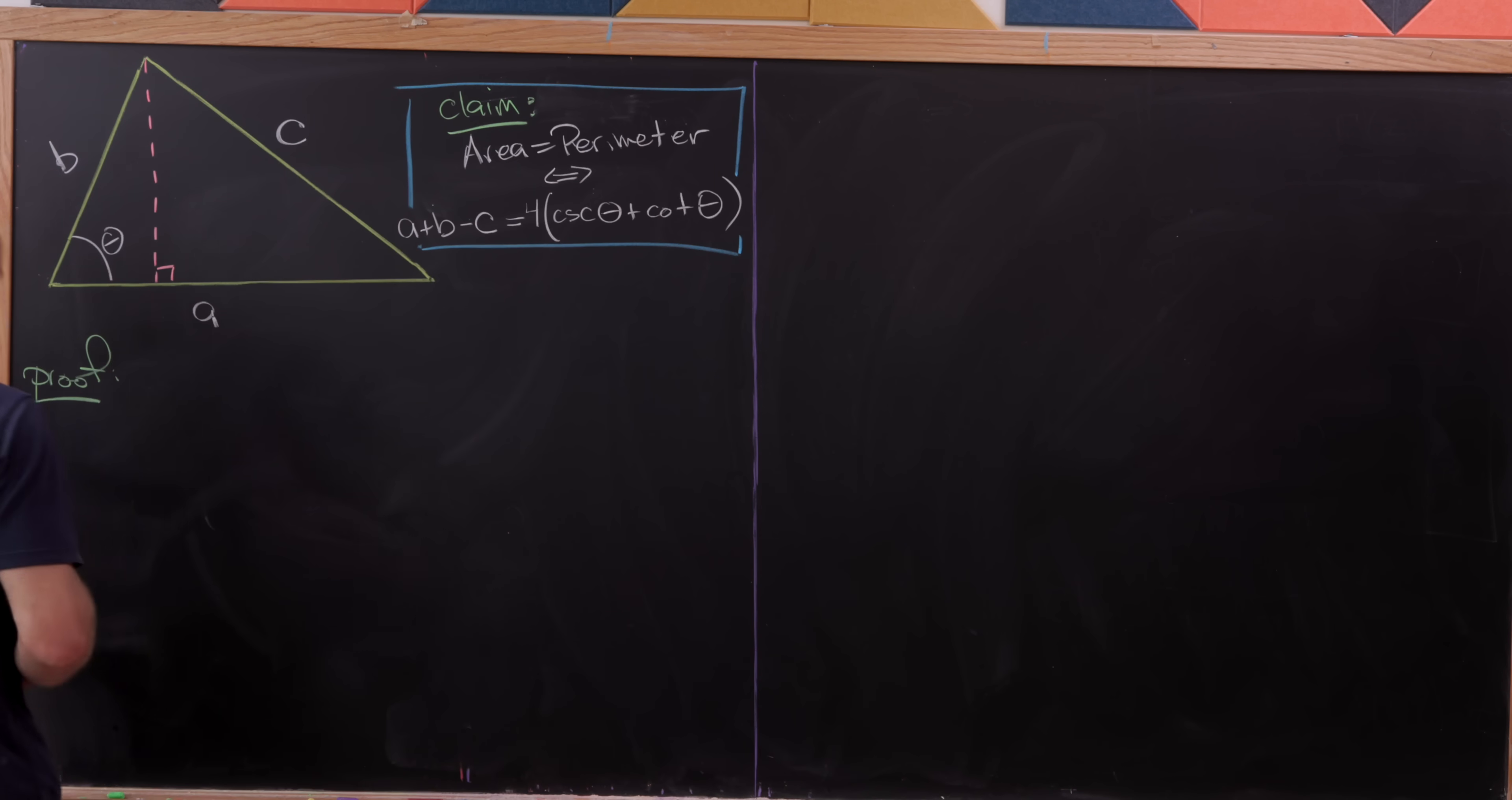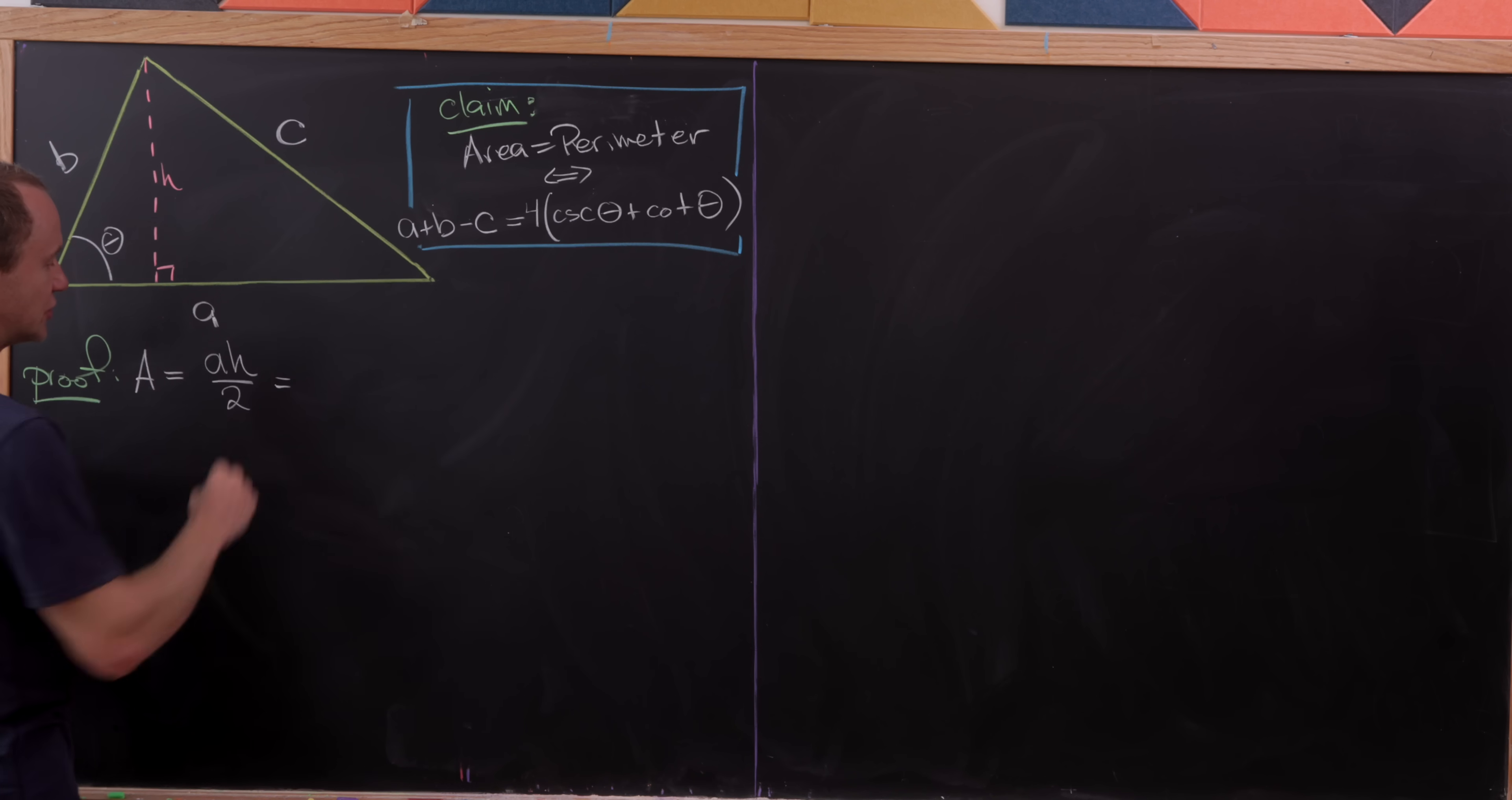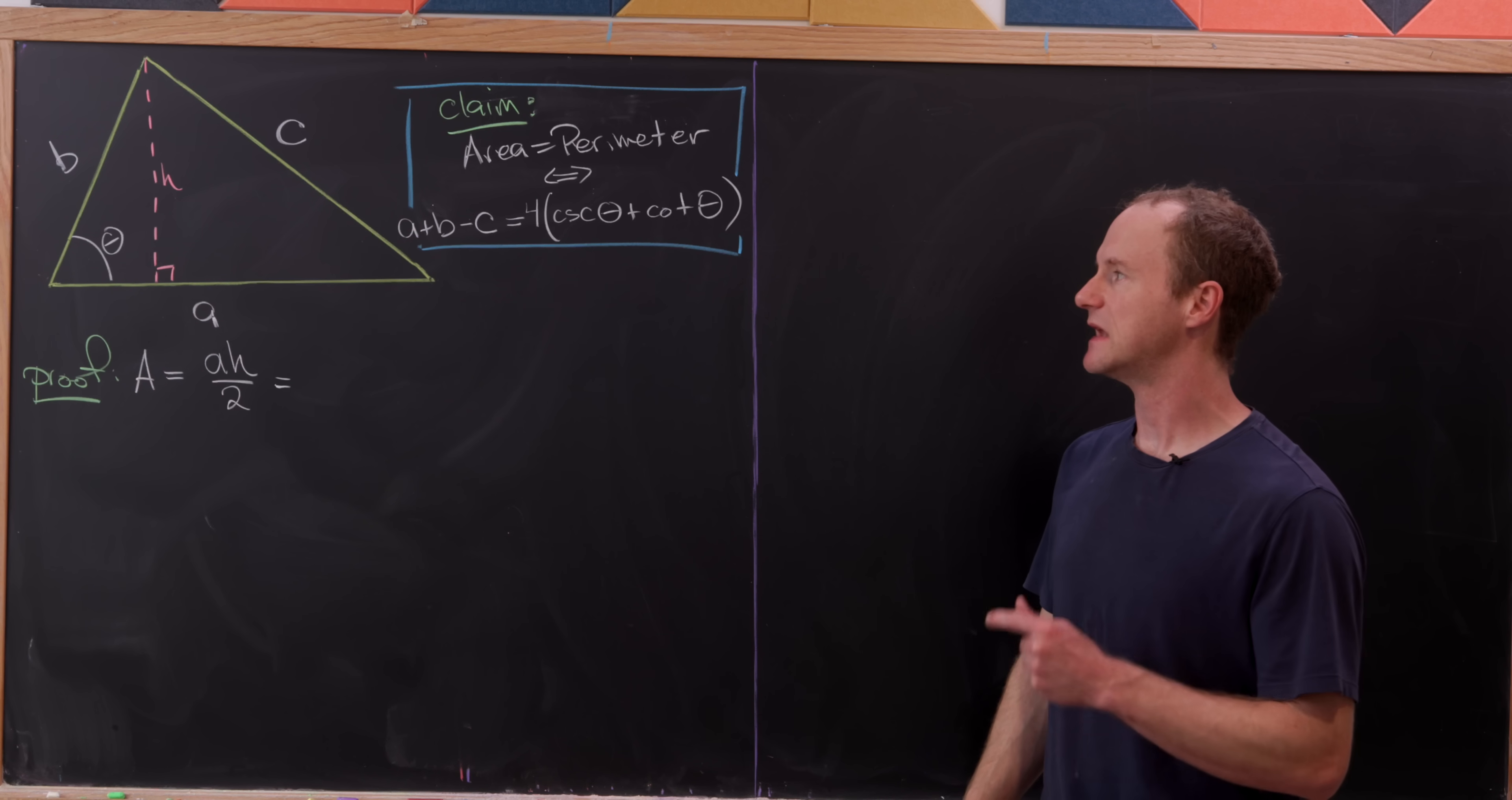And then here I'll call this h, obviously the height of the triangle. And the area of this triangle is going to be a times h over two.